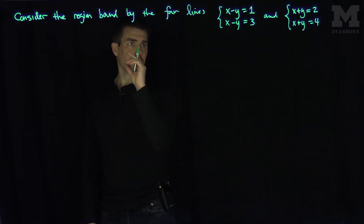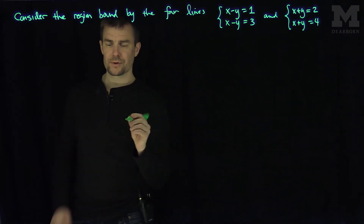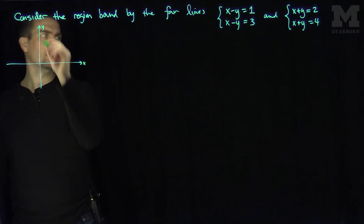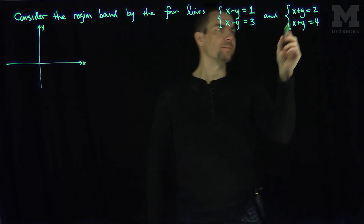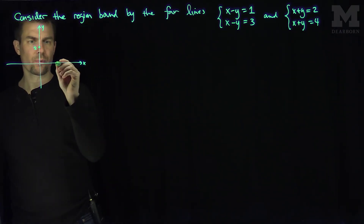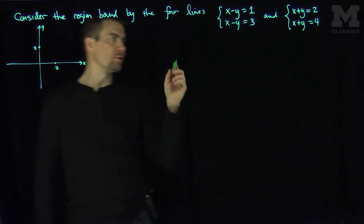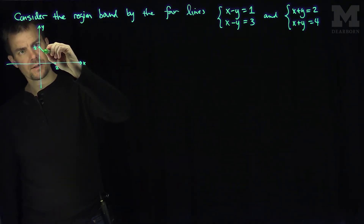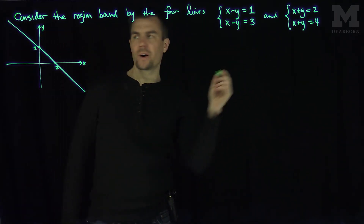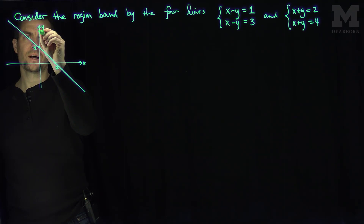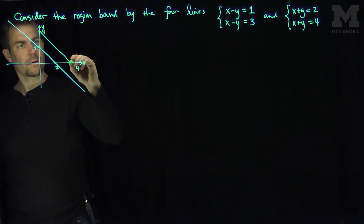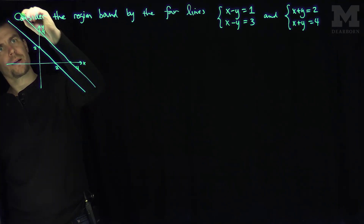I have the region defined by those lines, so let's try to roughly sketch it. Here's x and here's y. If x plus y equals two, that passes through the point two on each axis, and it looks like this. Then x plus y equals four is a parallel line to that, just shifted out to four. So those are two parallel lines.